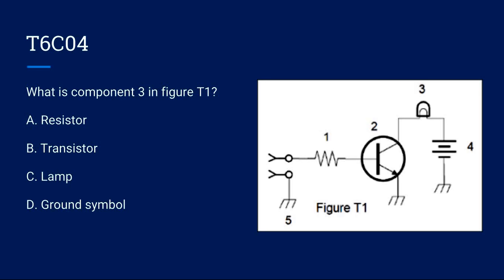T6C04: What is component 3 in figure T1? A, resistor. B, transistor. C, lamp. Or D, ground symbol? The correct answer is C, lamp.